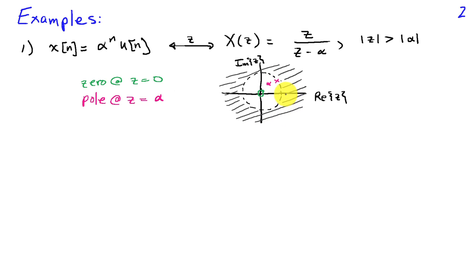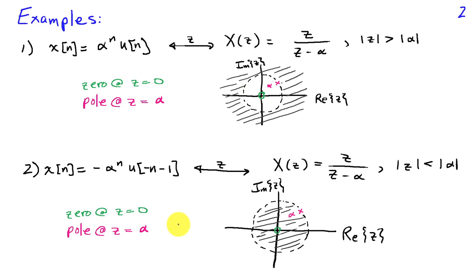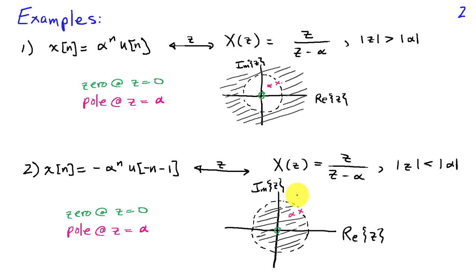The region of convergence is outside of a circle whose radius is alpha, so the pole will lie on that circle. On the other hand, if we consider the anti-causal version — X of n equals negative alpha to the n times u of negative n minus one — that has the same Z-transform X of Z equals Z over Z minus alpha. But in this case, the region of convergence is all values of Z interior to the circle with radius alpha. So we have a zero at Z equals zero, a pole at Z equals alpha, and the region of convergence is inside the circle corresponding to the radius of the pole.